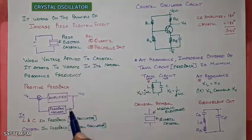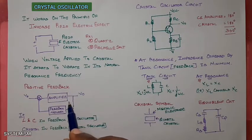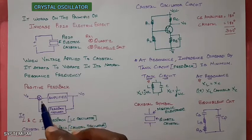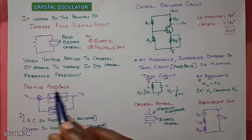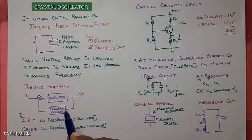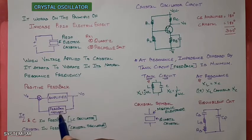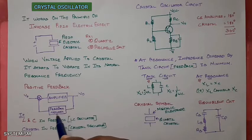We know what is an oscillator — we give positive feedback to an amplifier, then that amplifier is converted into an oscillator. If you connect L and C components in the feedback, then it is called an LC oscillator. Instead, if you connect a crystal in the feedback network, then it is called a crystal oscillator.